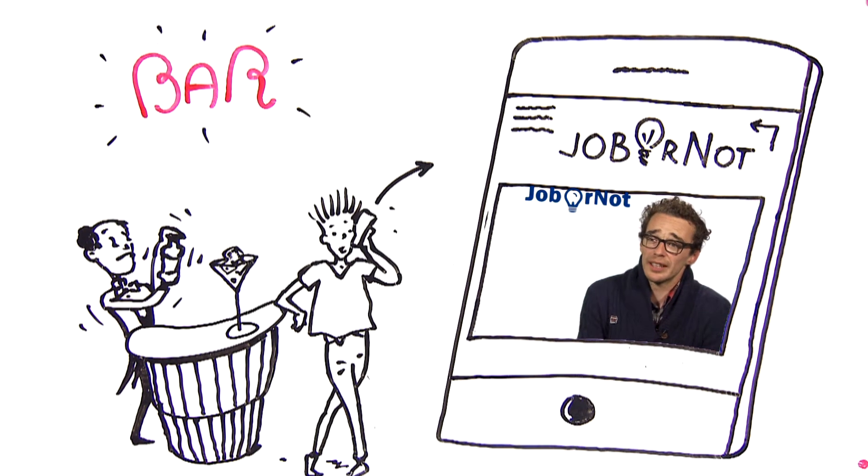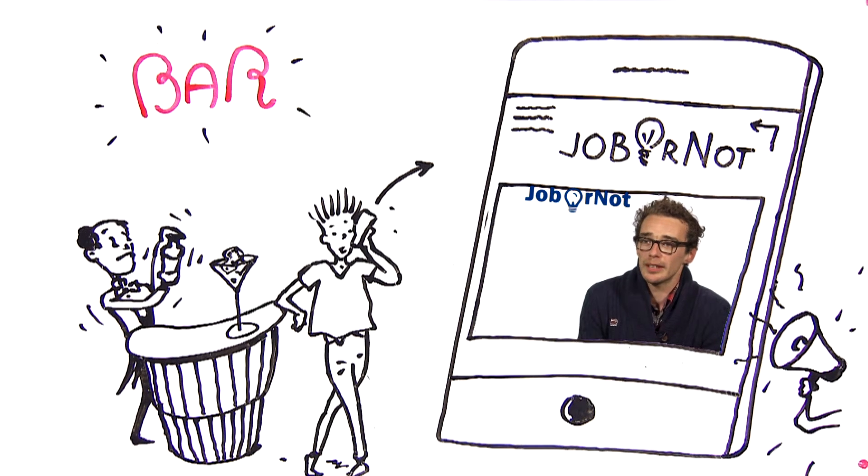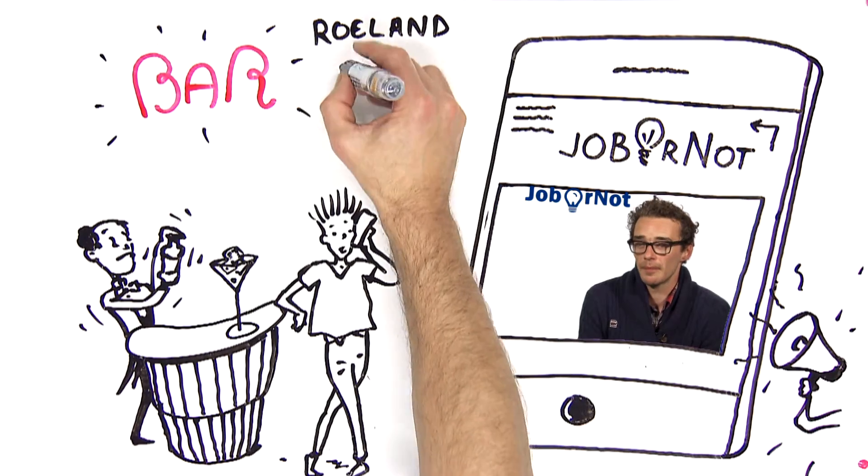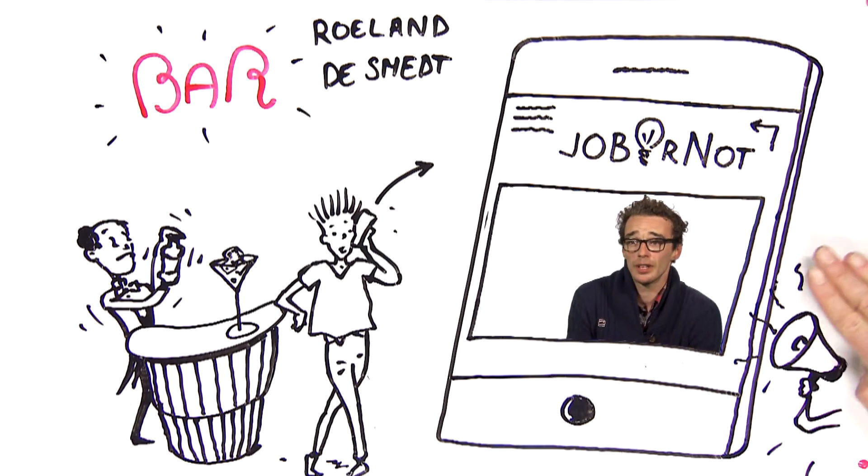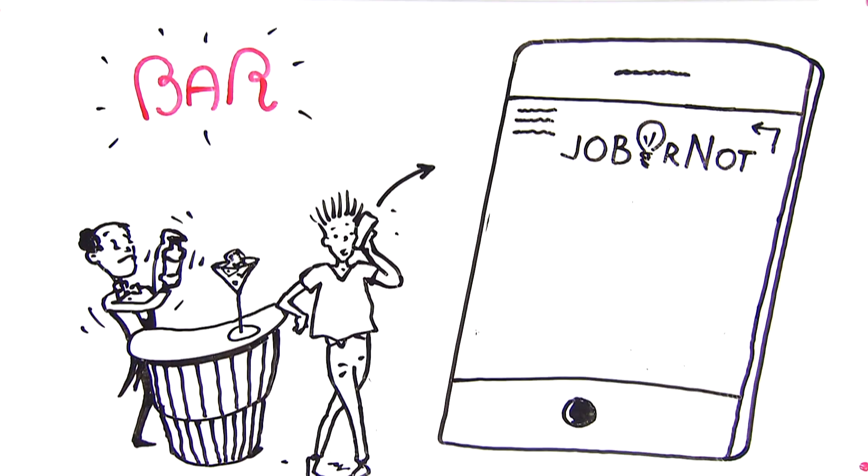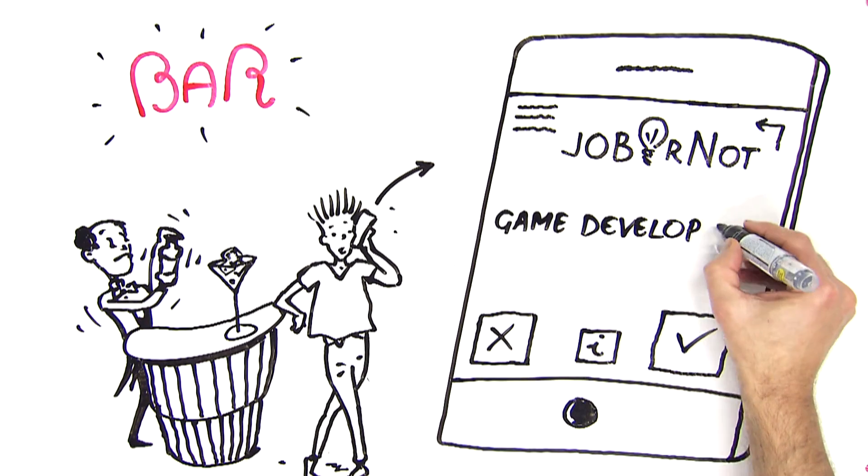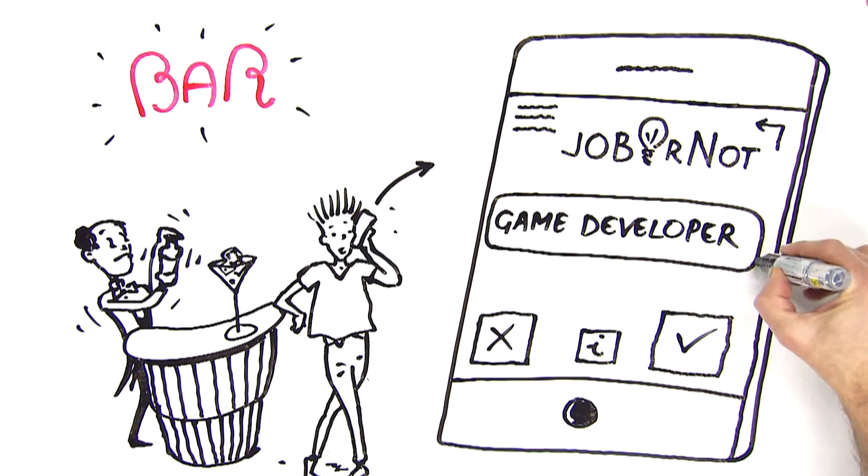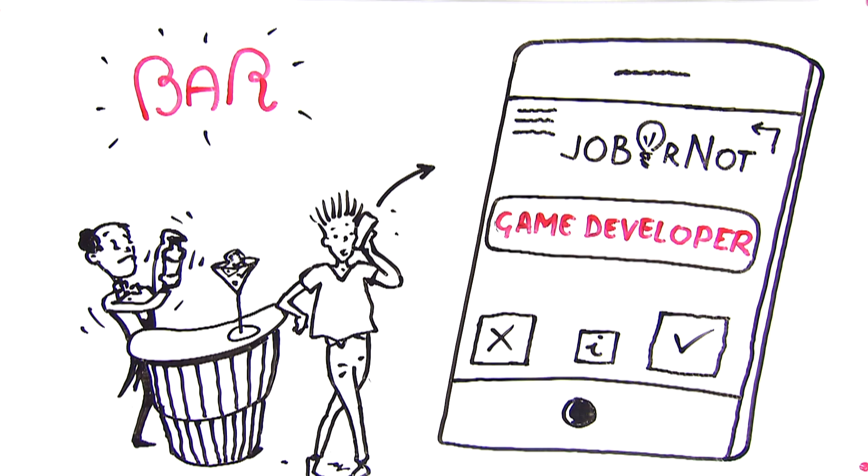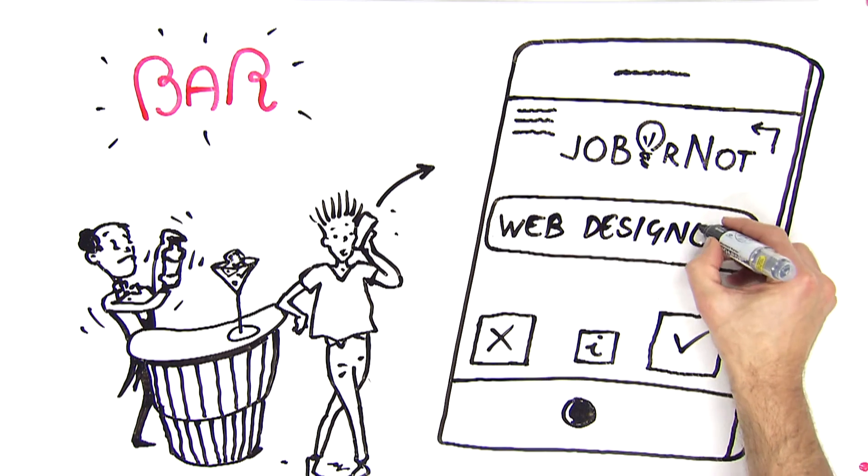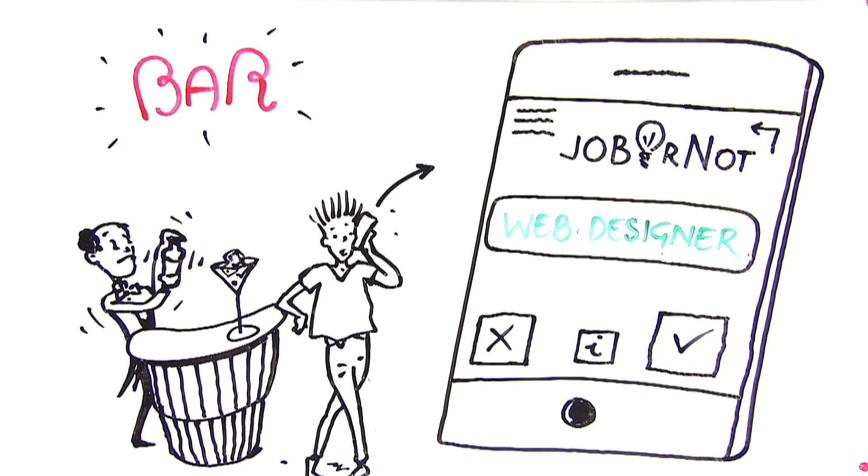As students of the Erasmus University College Brussels, we started this project as part of our training. JobOrNot is a simple, elegant app to discover personalized vacancies. The app shows a vacancy which you can refuse or save. JobOrNot will get to know you better with every choice you make. That way, the app is able to present the most suitable vacancies.